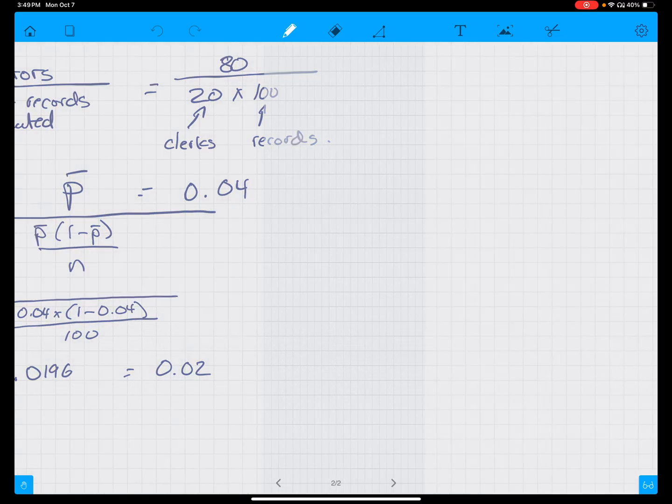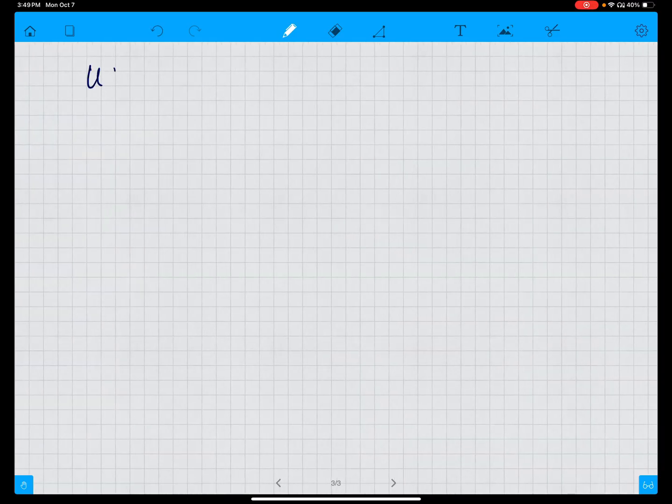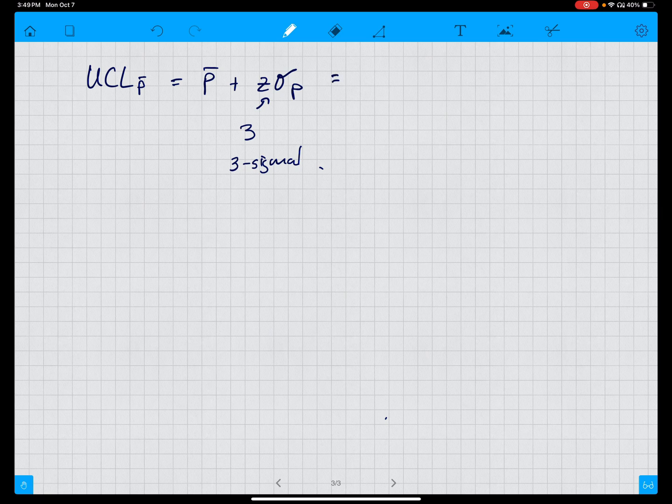If we go to the next page here, the upper control limit of p-bar is equal to p-bar plus z times sigma p. Z is 3 because we're doing 3-sigma. So that is equal to 0.04 plus 3 times 0.02, is equal to 0.10.